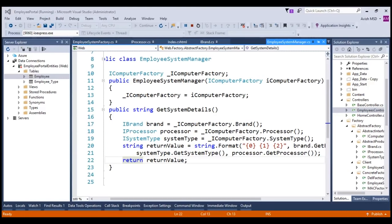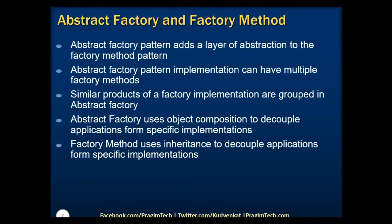With this we have successfully addressed the requirement using the abstract factory design pattern. Now let's look at the major differences between abstract factory and factory method. The abstract factory design pattern adds a layer of abstraction to the factory method pattern. Abstract factory can have multiple factory methods; similar products of factory implementations are grouped in abstract factory. Abstract factory uses object composition to decouple the application from specific implementations, whereas factory method uses inheritance to decouple applications from specific implementations.